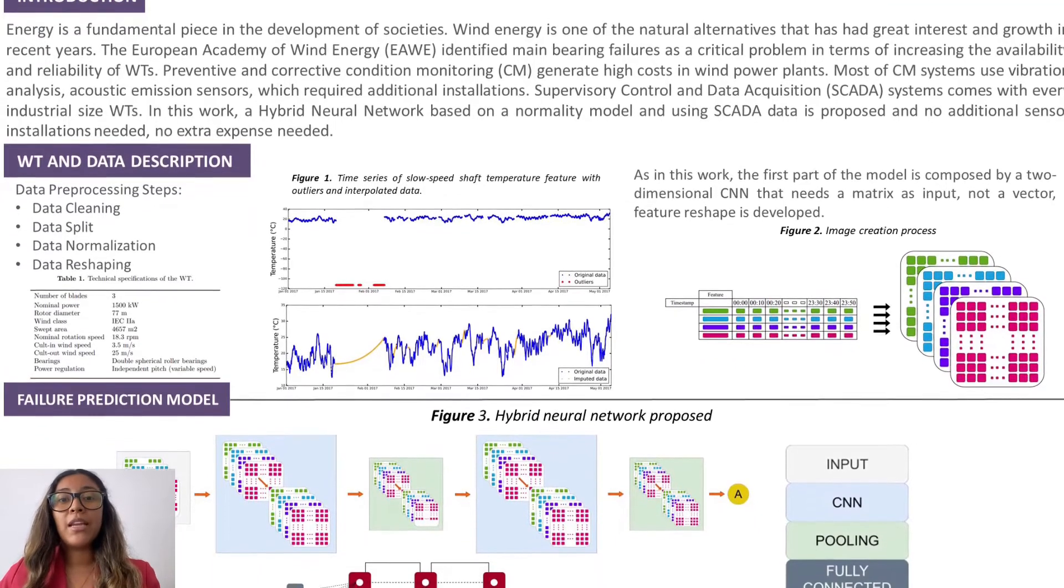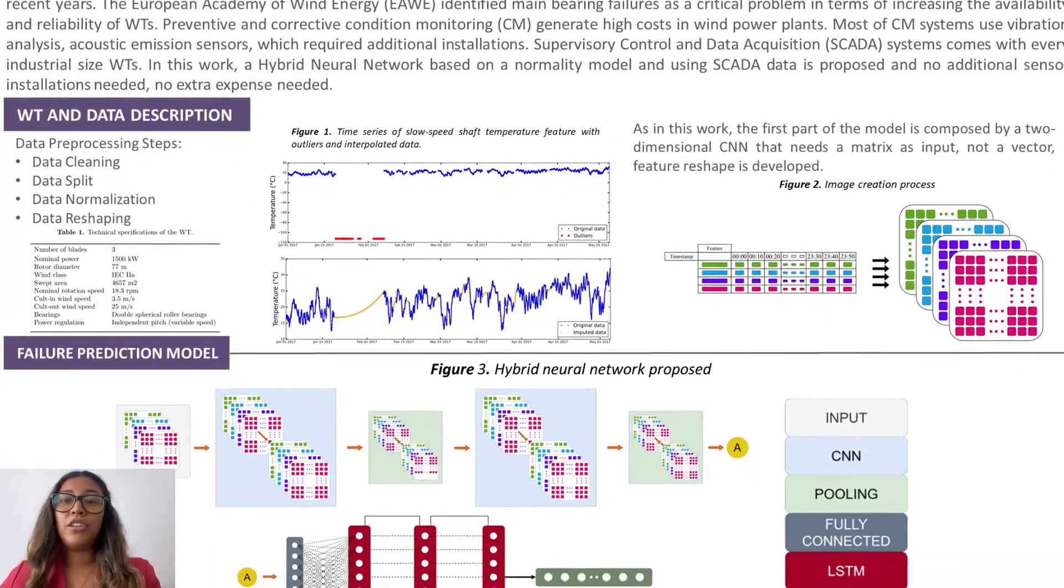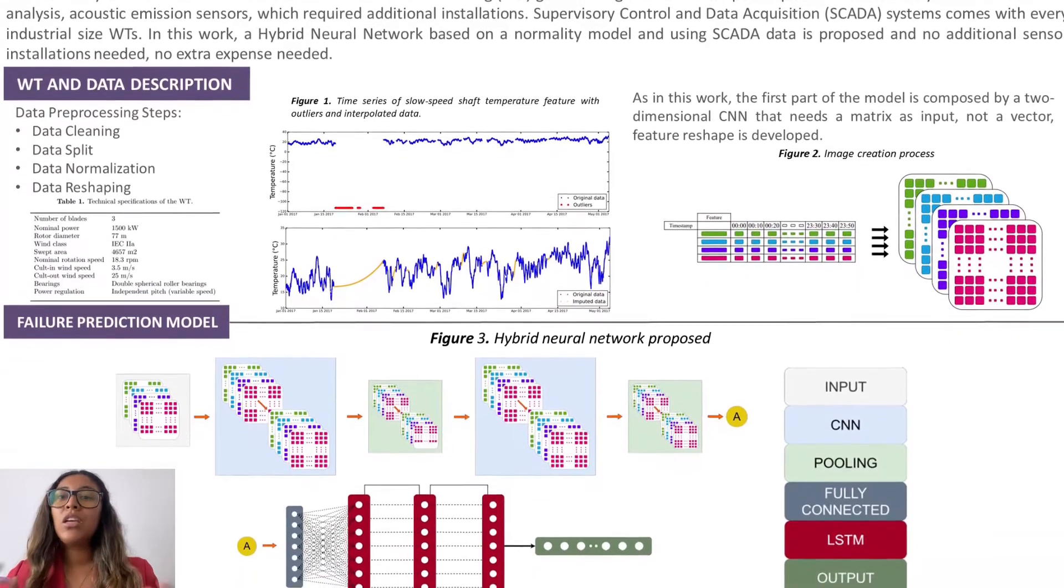The ways to perform maintenance are preventive, corrective, and predictive. The first two methods generate high costs in wind-powered plants.